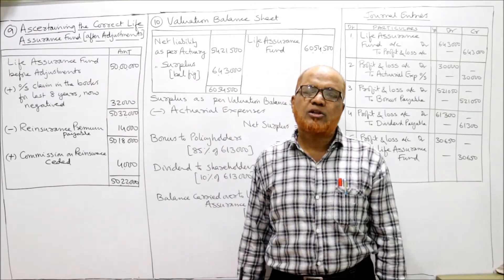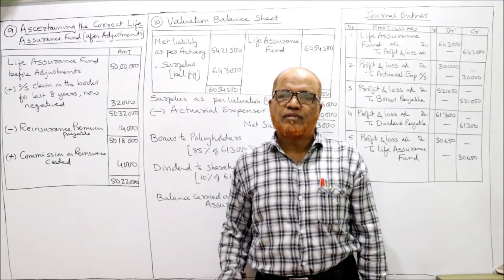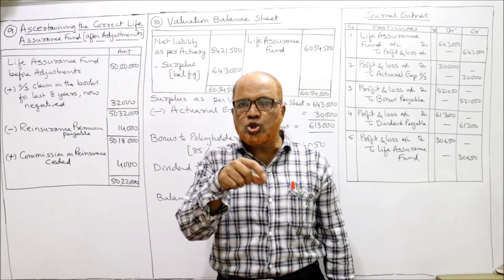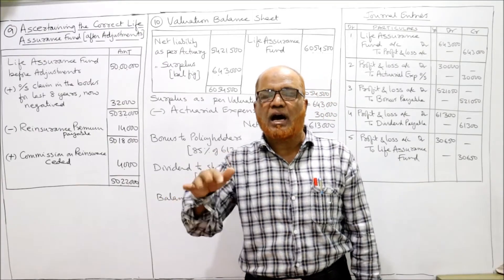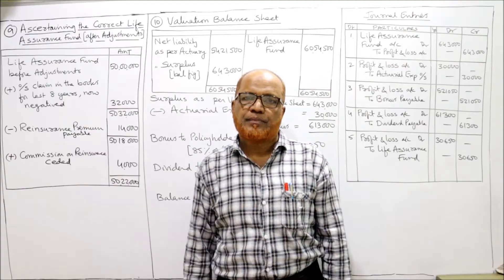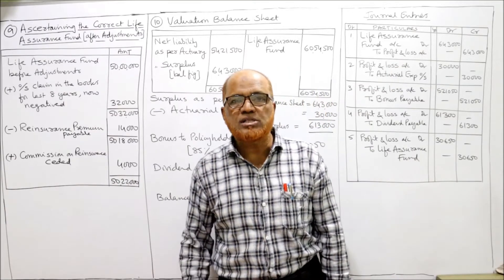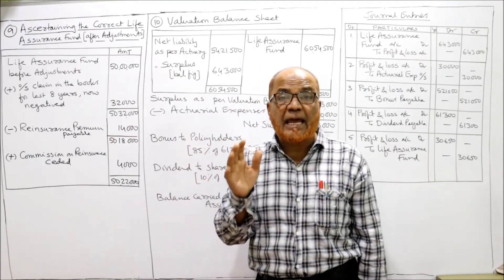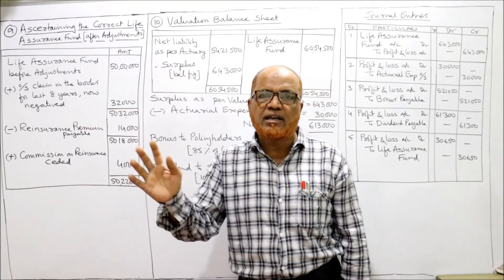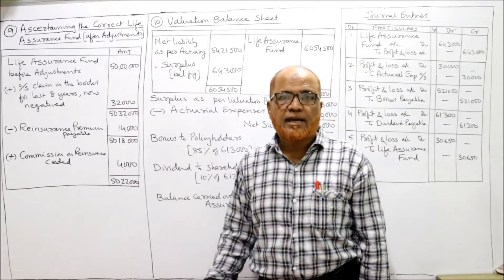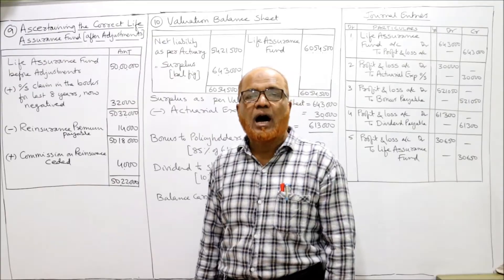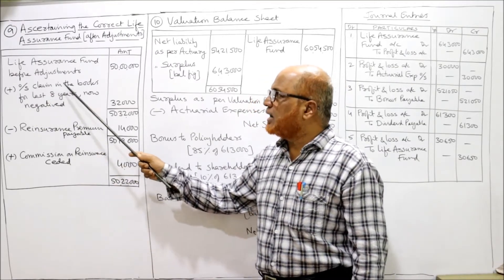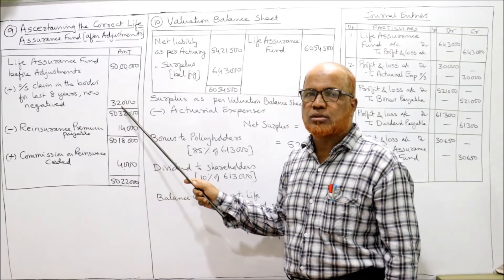In India we have the Limitation Act — a person should recover the amount within a period of 4 years. If no action is taken and the amount is not recovered within that period, then after that period the amount cannot be recovered; the person cannot sue in a court of law because it will become time-barred. The life insurance company has waited 8 years but the person has not taken the money. So the company will negative the outstanding claim. It's a gain to the company — the company does not have to pay the liability. So the outstanding claim negated, not to be honoured, should be added to the life insurance fund: add ₹32,000. Fund becomes ₹50,32,000.